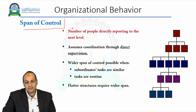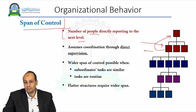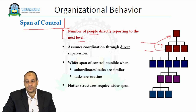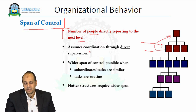Span of control is defined as the number of people directly reporting to the next level. The more employees you have, the wider the span of control. It assumes coordination through direct supervision. A span of control allows directors and supervisors to better communicate with employees, but if the span of control is quite wide, communication might face a lot of problems. That is why further division of labor might be advised, or within the span of control there can be different teams.